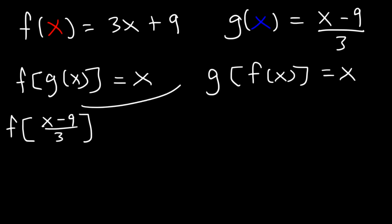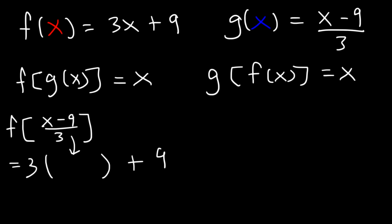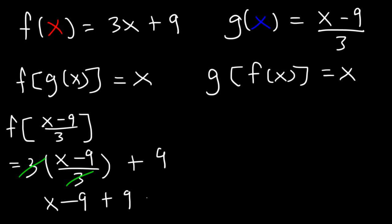Now let's take that and plug it into f. Replace the x portion with x minus 9 over 3. Then 3 divided by 3 cancels, so we have x minus 9 plus 9. Negative 9 plus 9 is 0, so we simply get x — which is what we want.